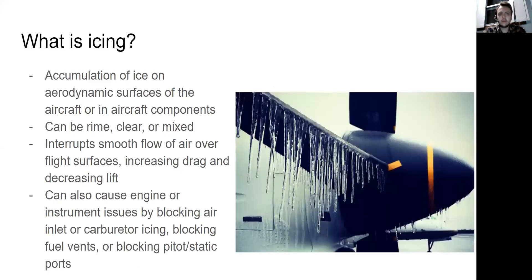So let's begin by explaining what icing actually is. Icing is the accumulation of ice on aerodynamic surfaces of the aircraft or in various aircraft components like carburetors and fuel tanks. It can be three things. It can be rime ice which is more rough and milky. It can be clear ice which is more smooth and clear, or it can be a mix of both.